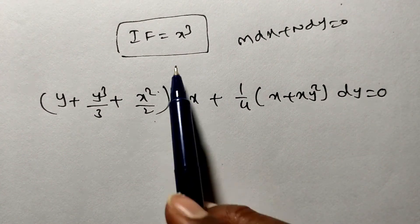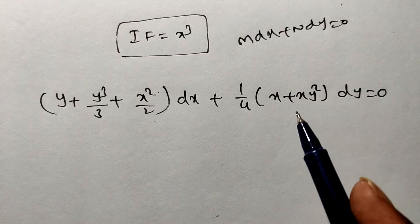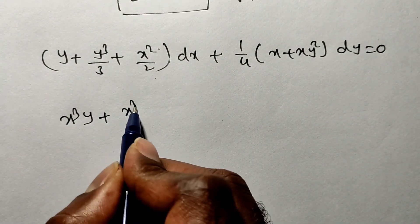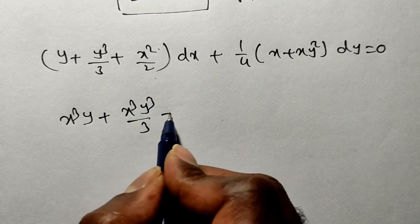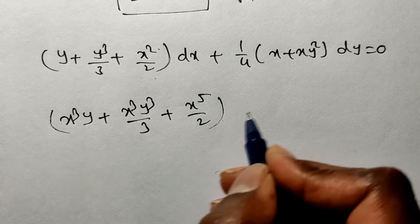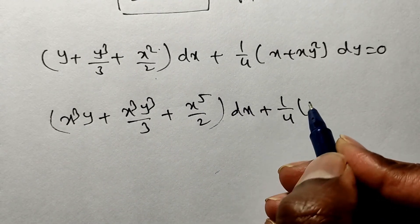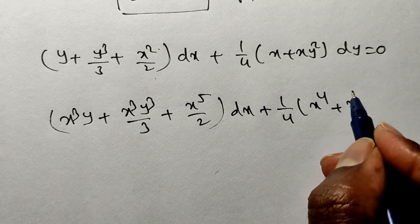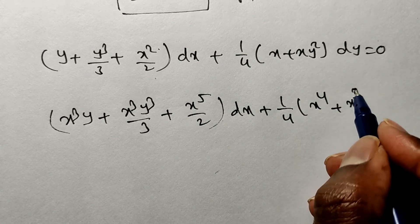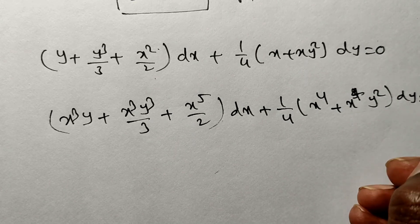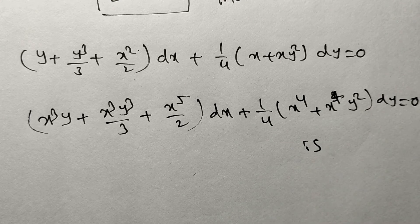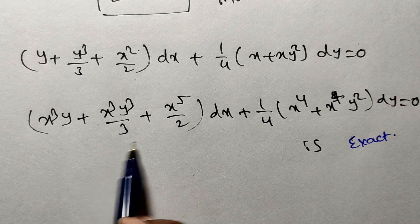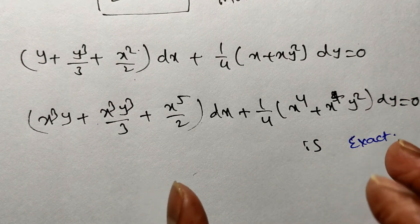Multiplying by x³: the new equation is (x³y + x³y³/3 + x⁵/2)dx + (1/4)(x⁴ + x⁴y²)dy = 0, which is now exact. To verify, find ∂M₁/∂y and ∂N₁/∂x — both should be equal. If you have doubt, you can verify; you will get equal values.